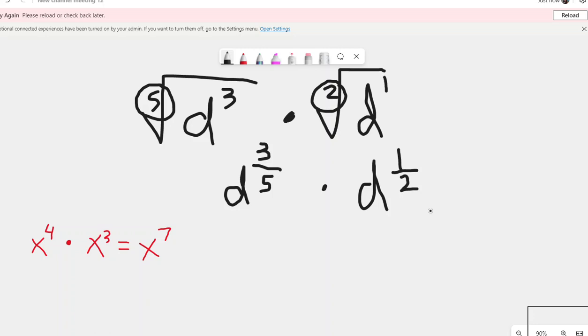Once we have it in rational exponent form and we understand the product of powers property, then we can apply the product of powers property, which tells me I need to do what with these two fractions that represent the exponents when the base is d. Keep the base d and add the exponents. So I need to figure out what is three-fifths plus one-half. Adding and subtracting fractions requires common denominators.